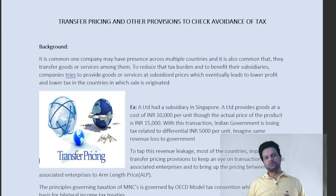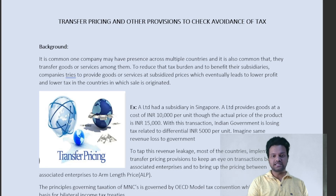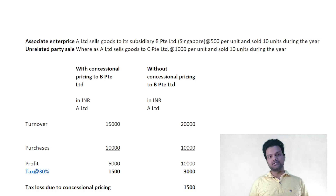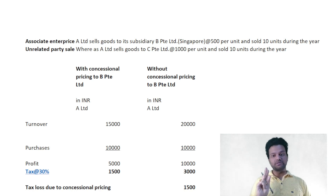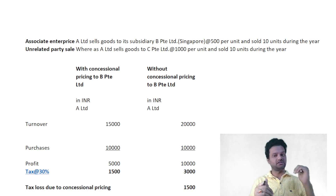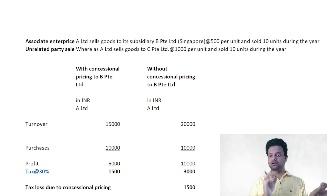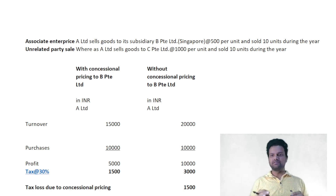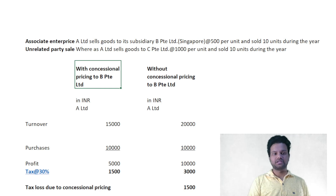I will take an example to understand why these transfer pricing provisions are important. In this example, I have taken three companies: A Limited, which is registered in India, and two companies BPT and CPT, which are registered in Singapore. BPT is a subsidiary of A Limited, and CPT doesn't have any relation with either A Limited or BPT — so it's an unrelated party.